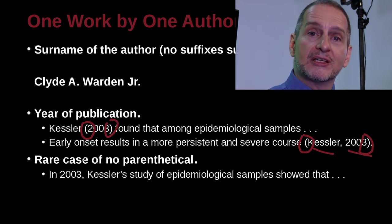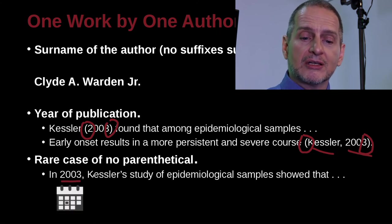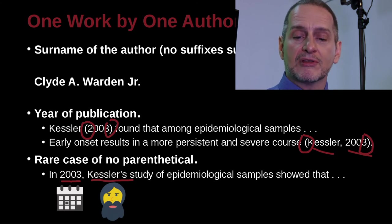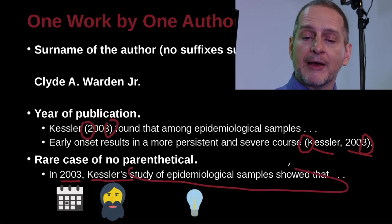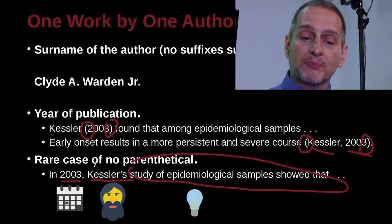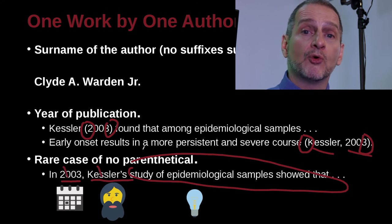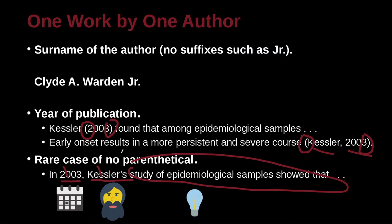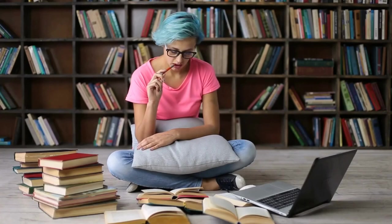That is really the easiest way to write your sentences. A harder way would be: 'In 2003, Kessler's study of this did something.' Here the year and the author are embedded directly in the sentence. We don't need anything in parentheses because we've already included it. That's a rare case and you probably won't do it much, because it's very hard to write that way, especially when you have many references, which you should have for good quality research.